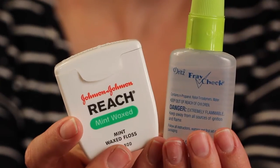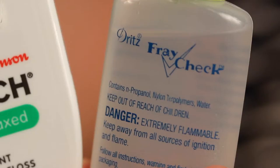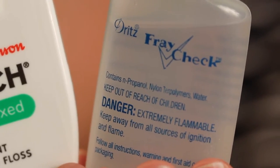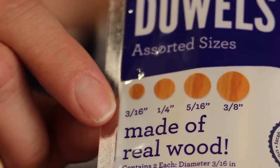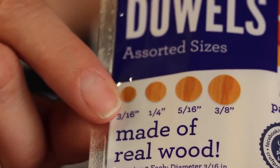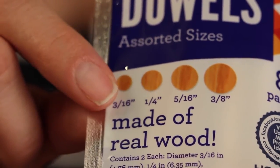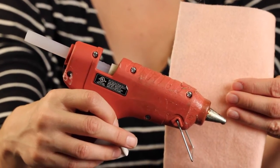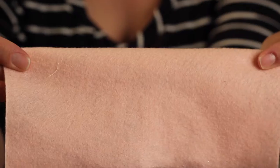Some dental floss for assembly and some fray check so our ribbon doesn't come unraveled. Then you'll need some round wooden dowels to wrap the ribbon around. I'll be using the smallest dowel which is 3/16th of an inch for this tutorial. My glue gun set on low and a piece of felt for the back of our headband.